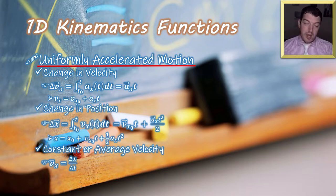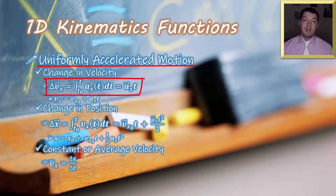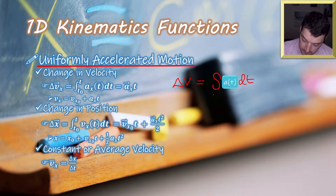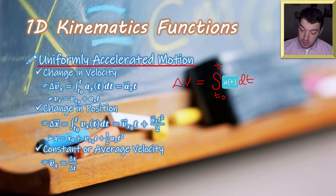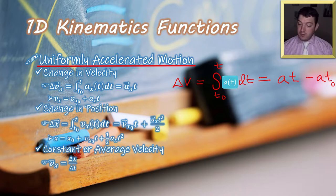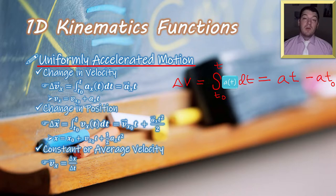First, let's look at how we get the change in velocity. The change in velocity is the integral of acceleration with respect to time. Since we have uniformly accelerated motion, that acceleration is a constant. The change in velocity equals the integral of acceleration with respect to time from our initial time to our final time. Integrating a constant gives us acceleration times the final variable minus acceleration times the initial variable. If our initial time is zero, the change in velocity is simply the product of acceleration and time.